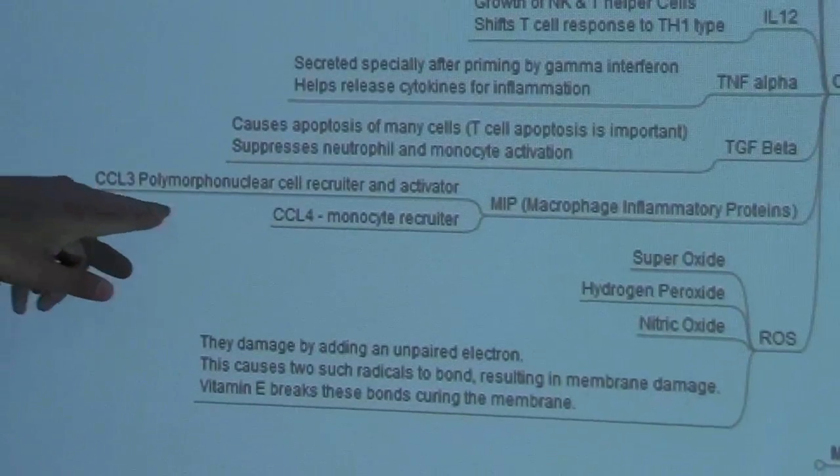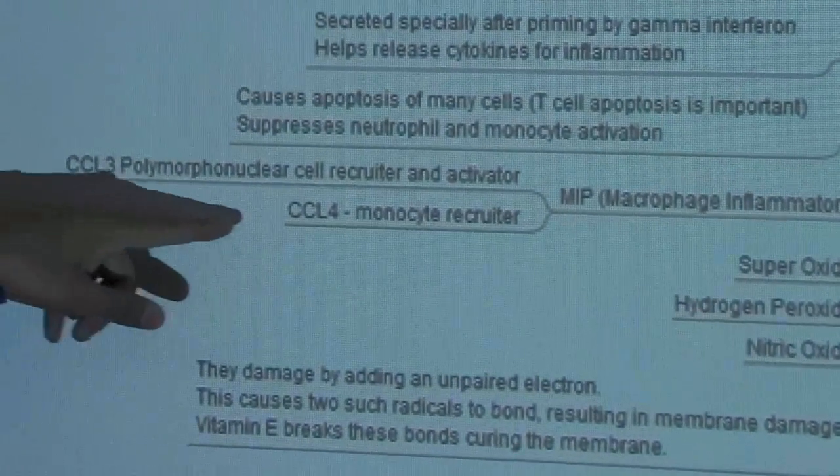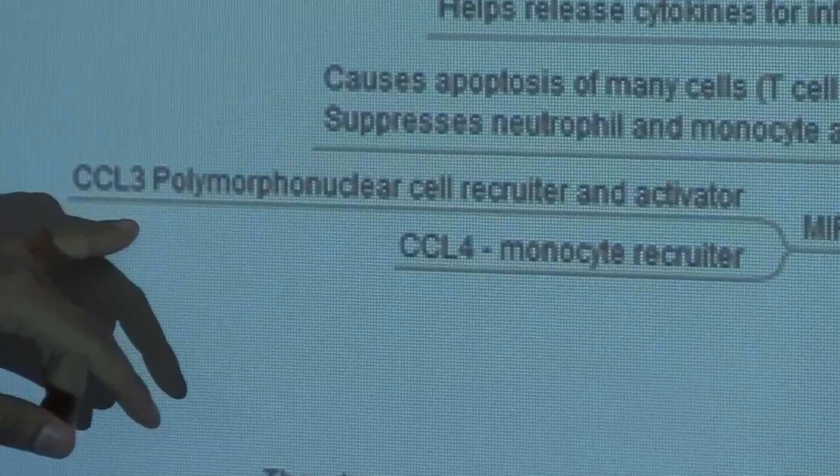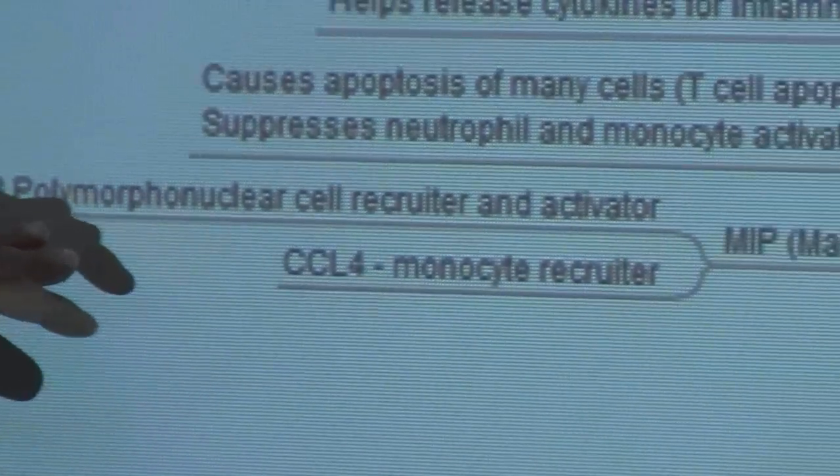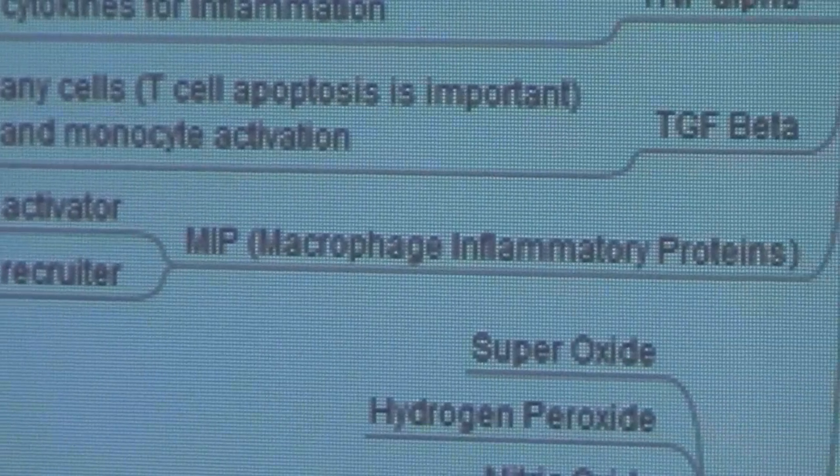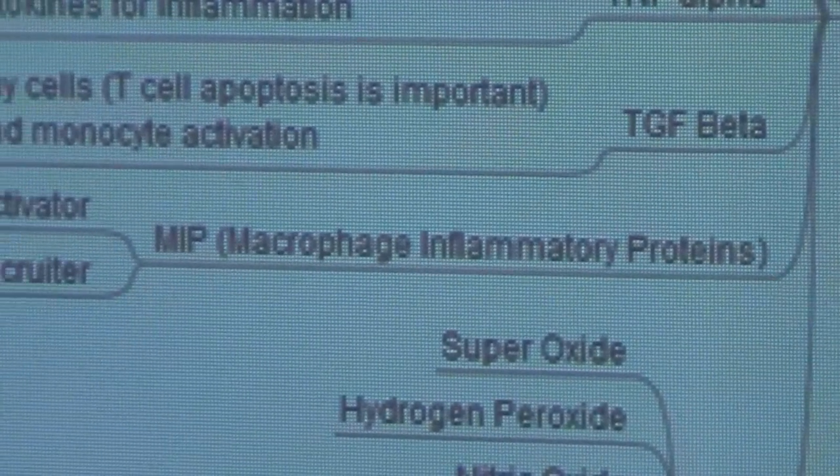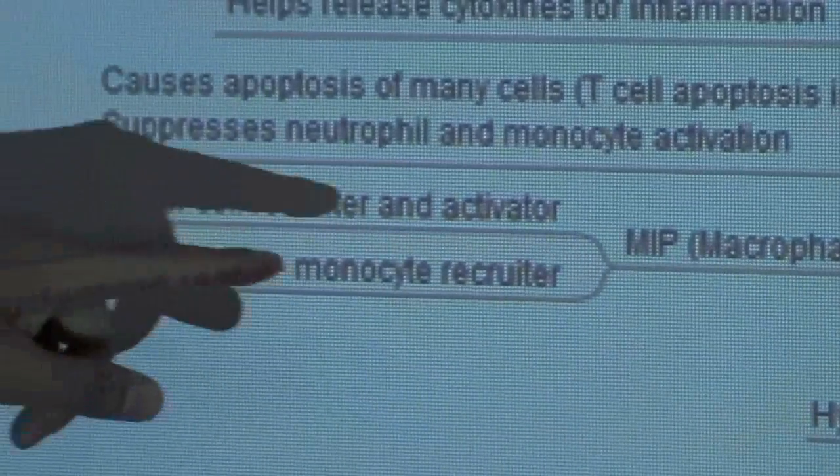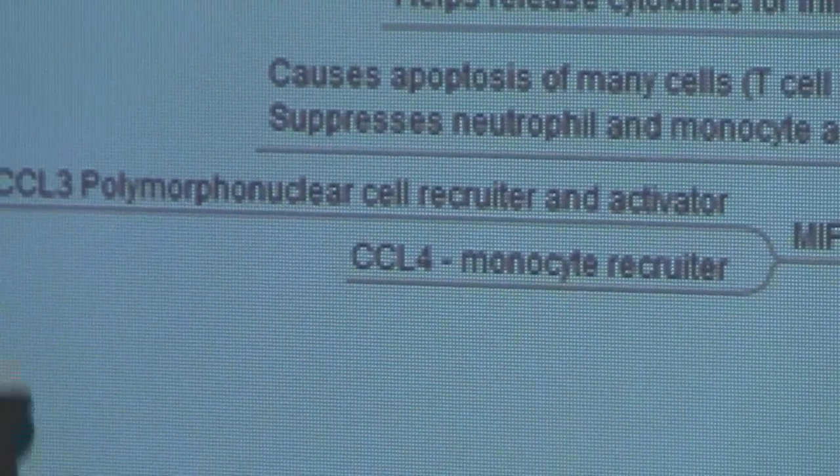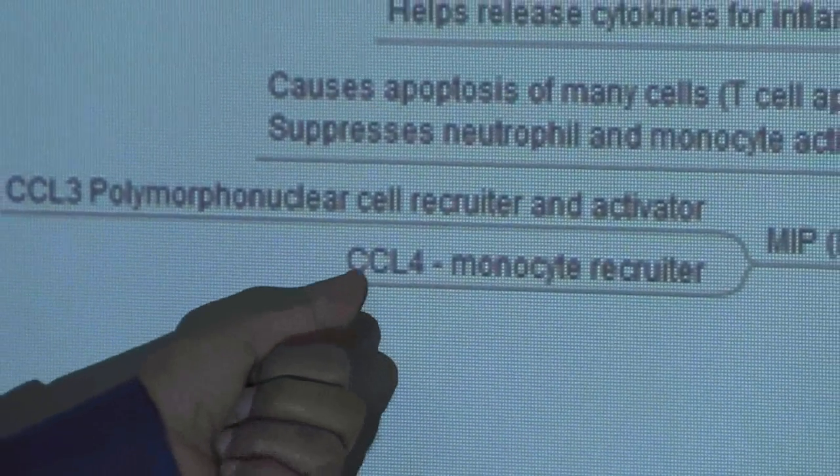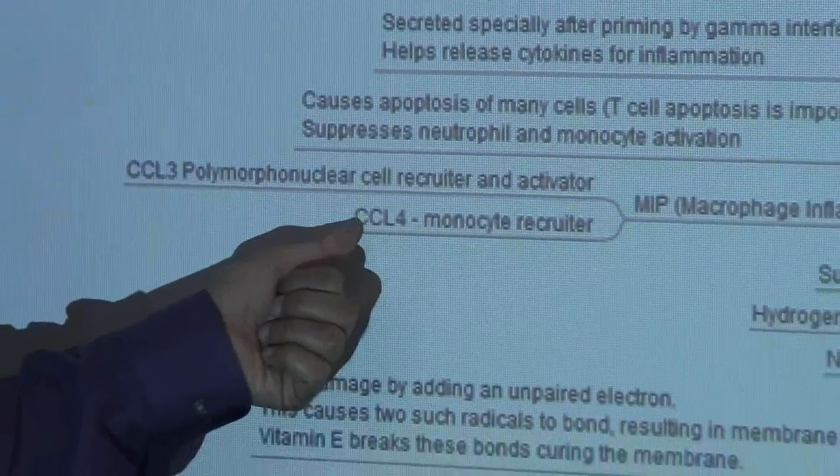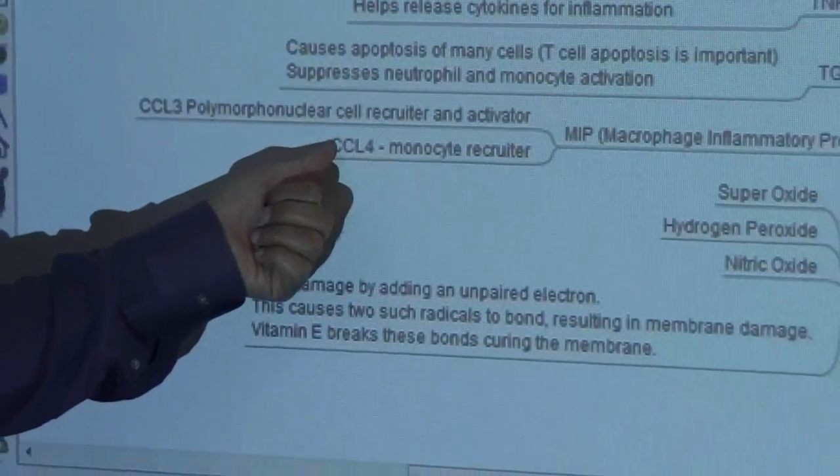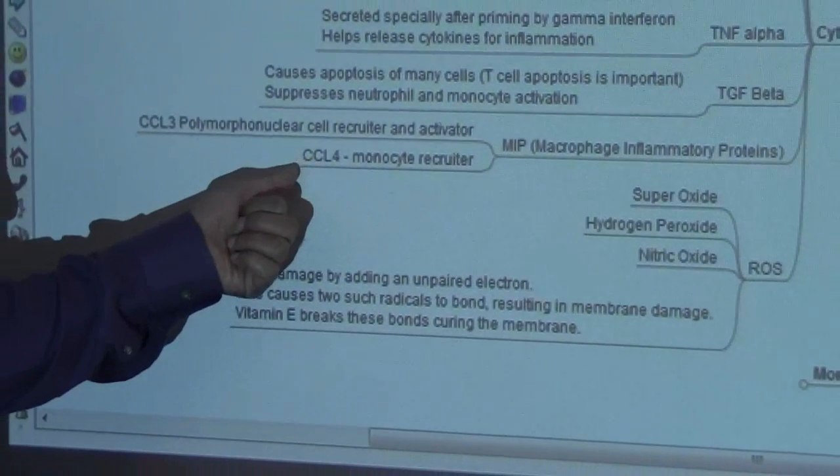CCL3 and CCL4 are very important. CCL3 are polymorphonuclear recruiter cells, for the neutrophils to come over. CCL4 are for the monocytes to come over. These are called CC because of the cysteine-cysteine residues. These are chemokines with cysteine-cysteine residues present on the end.